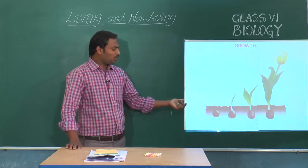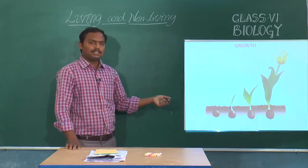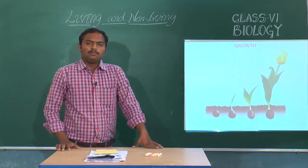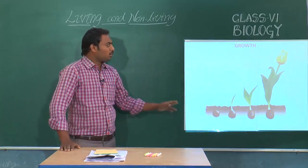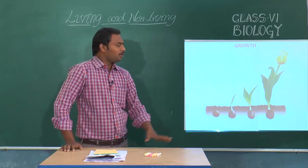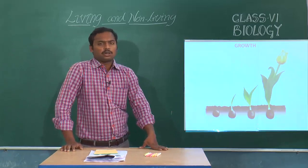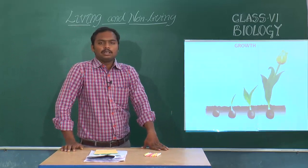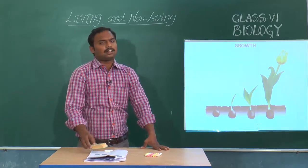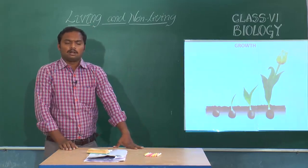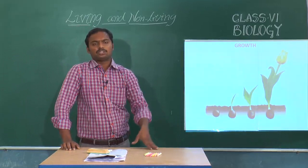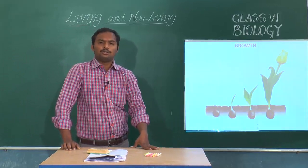With these two activities we can say that living forms have growth as one of their important characteristic features. Whereas we cannot see this property in non-living things like a table, chair, or duster — these things cannot grow and there will not be any change in their size due to growth.